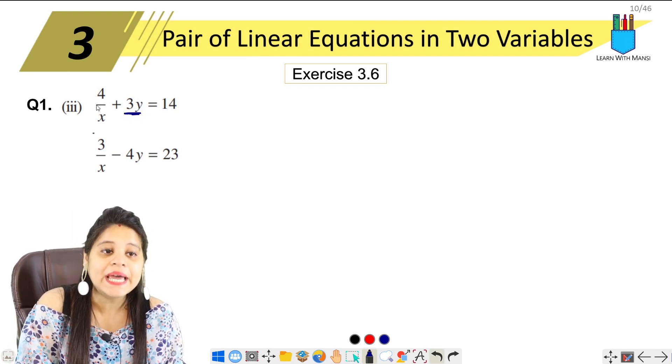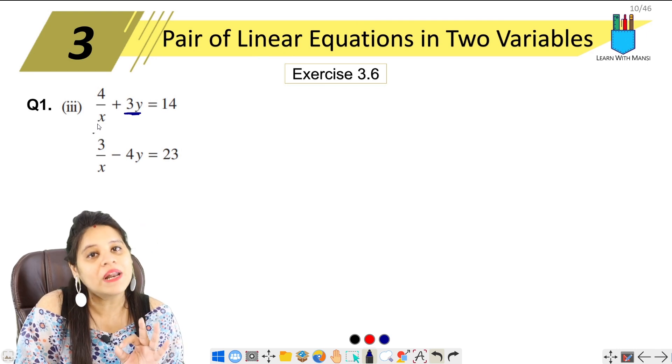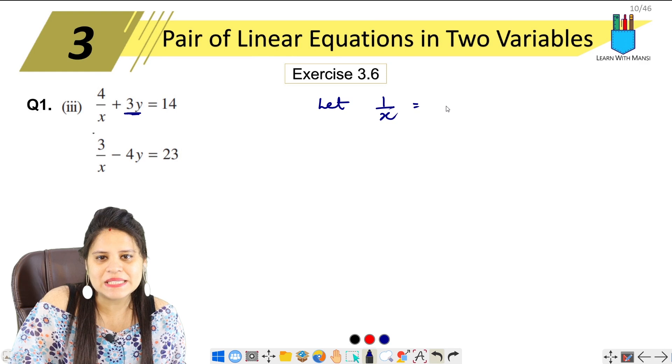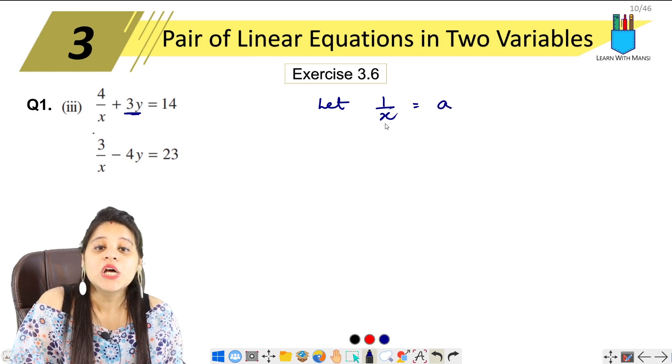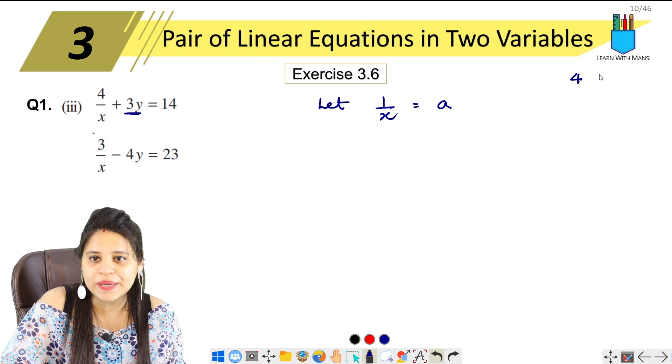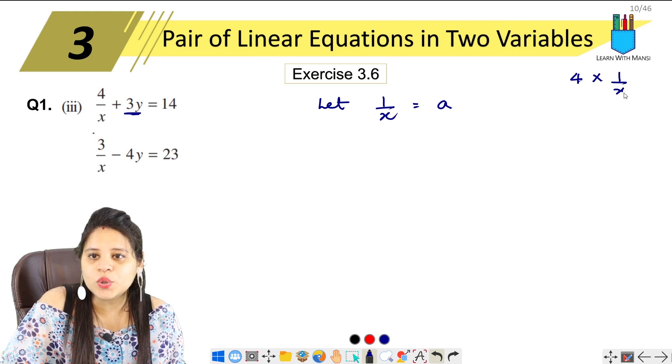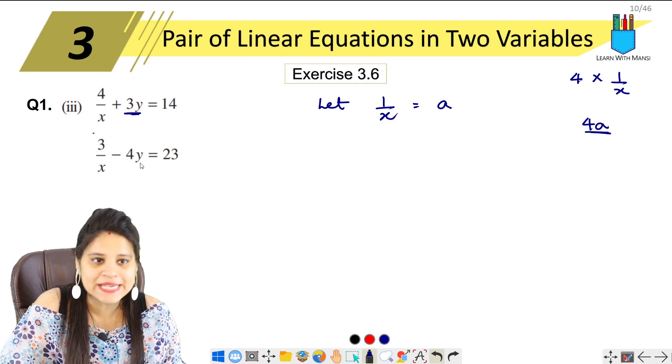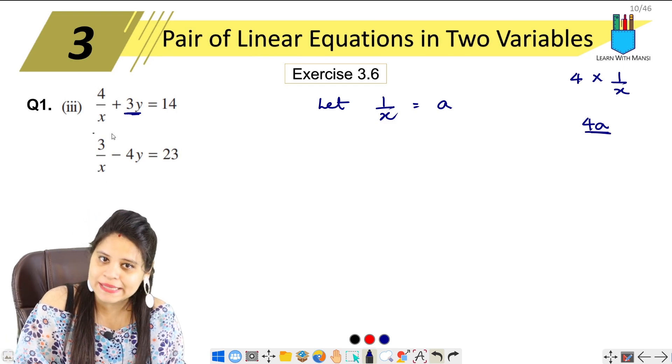It's simple. We need to change the term 1 upon x. So let 1 upon x - let's suppose we have taken this time a. So 1 upon x is a. Let me explain here. What is this? 4 into 1 upon x. 1 upon x is a, so it means 4a. The same thing here will be 3a.